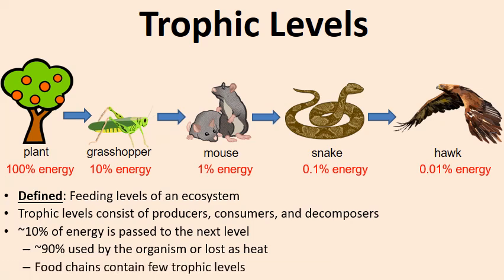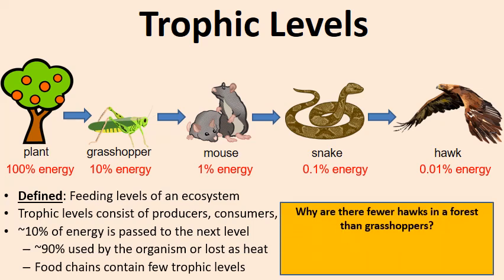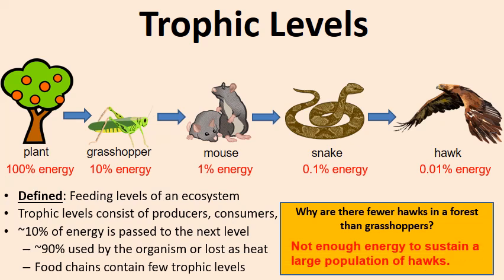This also explains why a food chain will typically only have 4, 5, or 6 trophic levels. It's very rare to see 7, 8, 9, or more levels, because when you get to the top there's often just not enough energy to sustain the organism. There are fewer hawks in a forest than grasshoppers because there's not enough energy to sustain a large hawk population — grasshoppers are lower on the food chain and have more energy available to themselves.